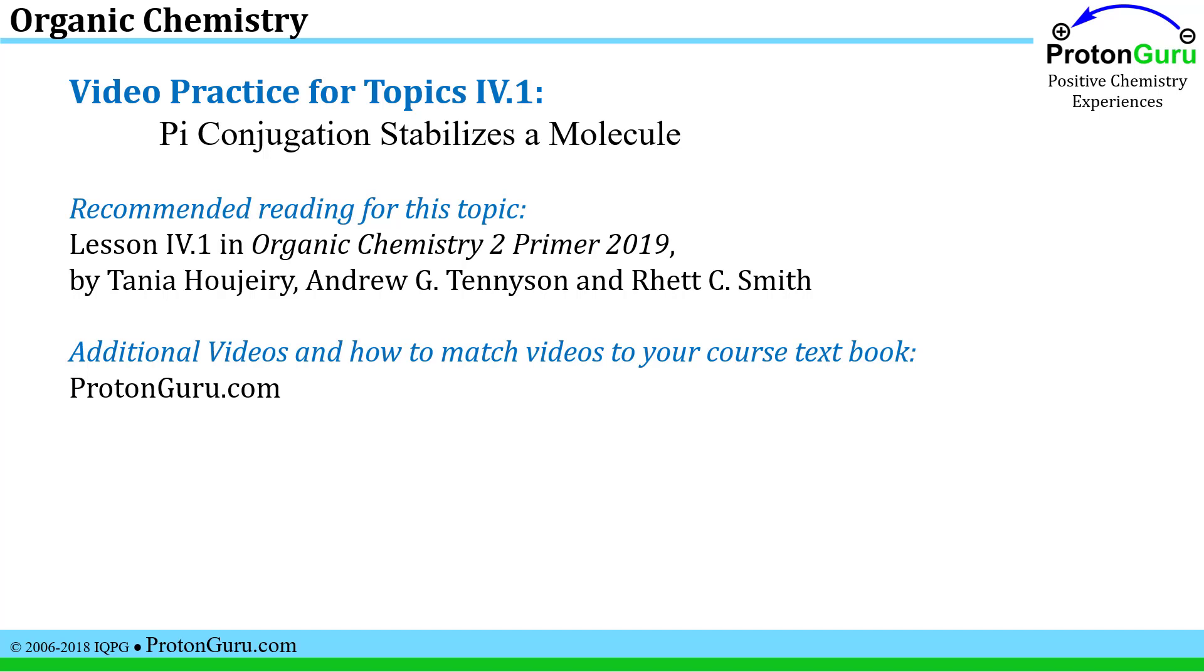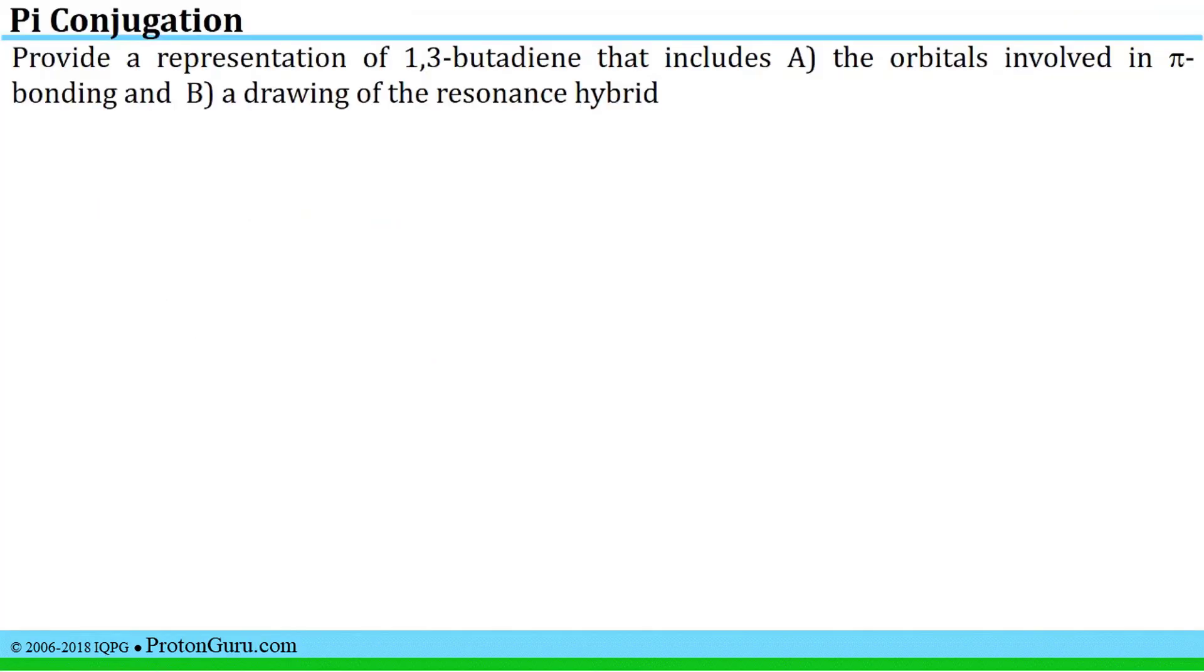Some brief and straightforward reading to get you ready for these kinds of problems can be found in the Organic Chemistry 2 Primer by Dr. Hujiri and co-authors. You can find additional videos and ways to match up those videos with the chapters in whatever textbook you're using for your course at ProtonGuru.com. There are several types of problems in which our knowledge of pi conjugation and its influence on stability might be employed.